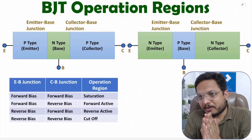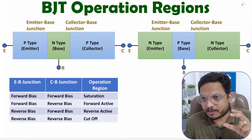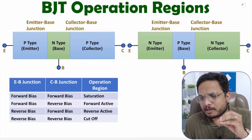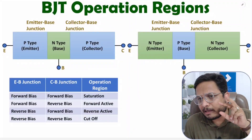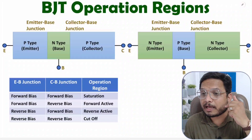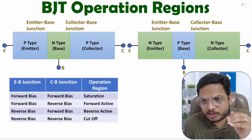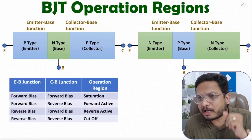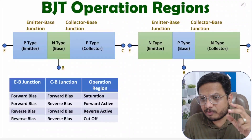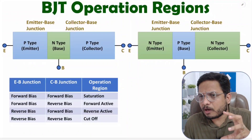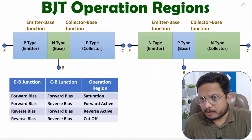Hello friends, welcome to Engineering Funder Family. In this video I'm going to explain BJT operation regions. To understand BJT operation regions, I'll be considering NPN as well as PNP transistors, and by biasing I'll explain how we can use BJT in different operational regions — saturation, cutoff, forward active, and reverse active — for both PNP and NPN transistors.